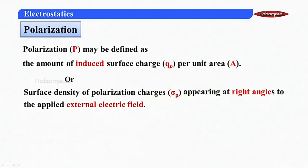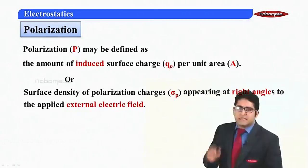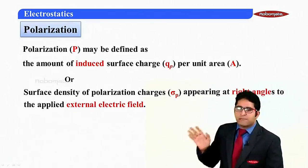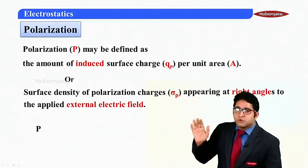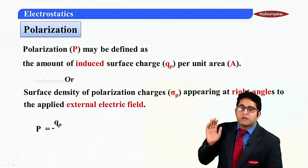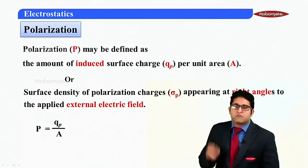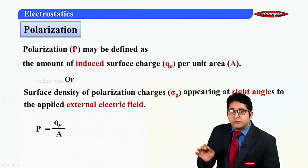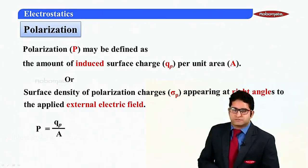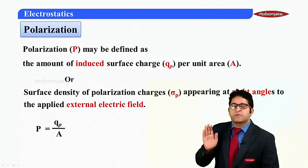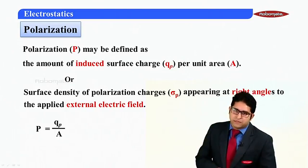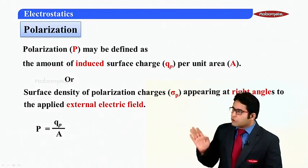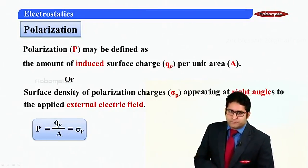Mathematically, polarization is written as capital P = Qp / A, where Qp is the induced polarization charge and capital A represents the cross-sectional area. This is also equal to sigma p, the surface charge density.